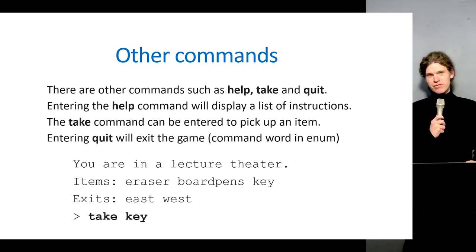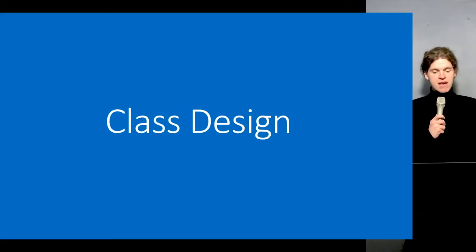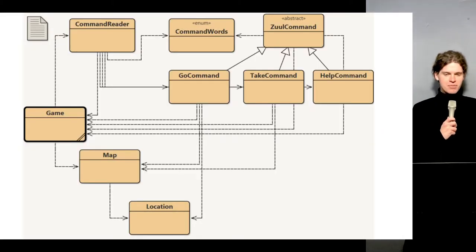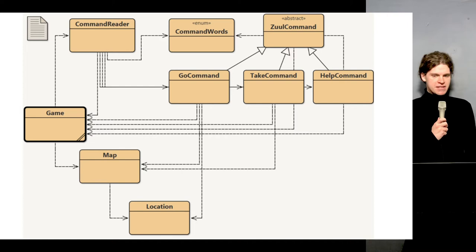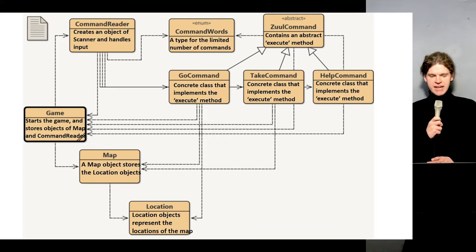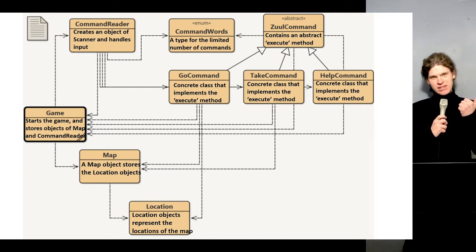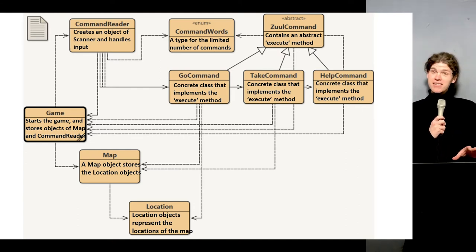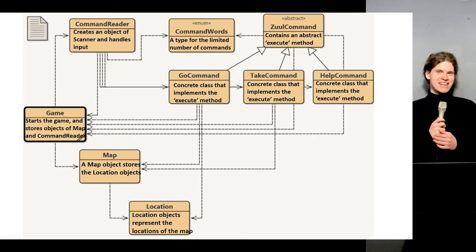We have various classes to interpret inputs and process the keywords typed in. Looking at the BlueJ class diagram, we have Map and Location. The map stores Location objects representing the rooms — in the template these represent different areas around a university. You can stick with that scenario or change it completely with your own creative license.